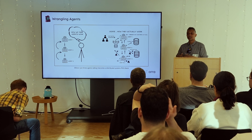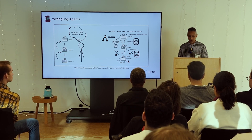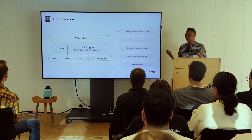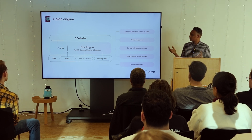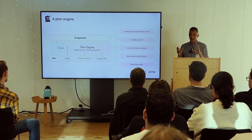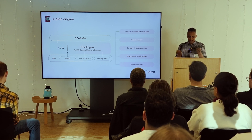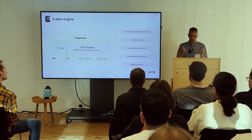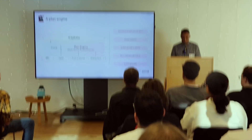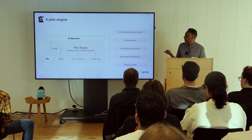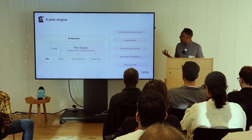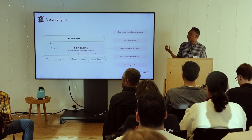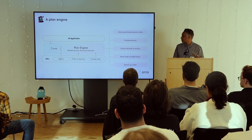We weren't working on Aura at first — we were working on a different product — and then we had this insight that what you really need is something to babysit these agents. We came up with this concept of a plan engine, and this plan engine gives us durable execution against everything that happens. Because agents are non-deterministic, you have to handhold them along the way to make sure that whatever they do, they can fix things — or if they change their mind, you can undo what they did.